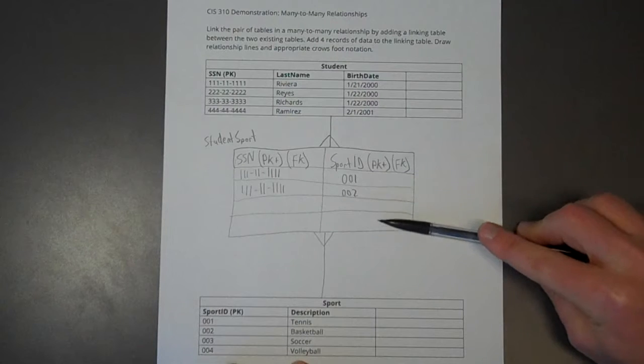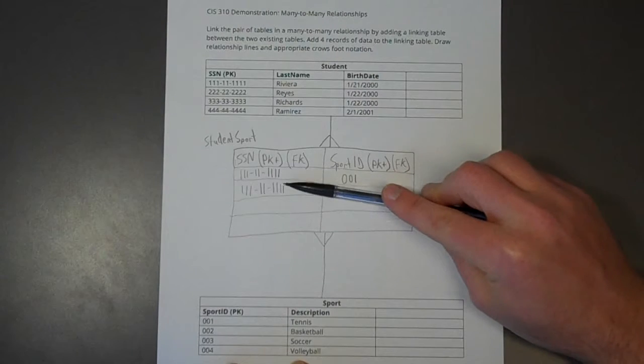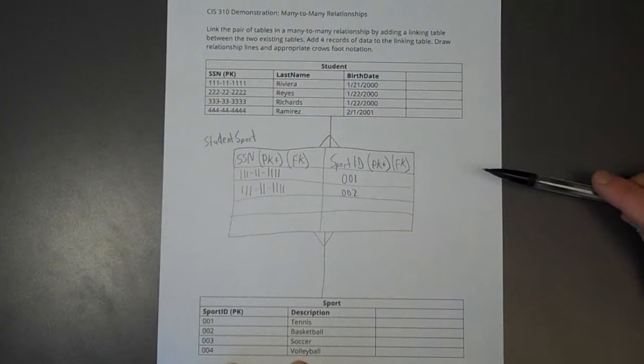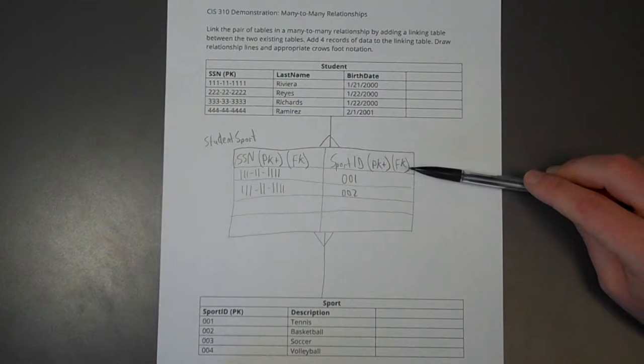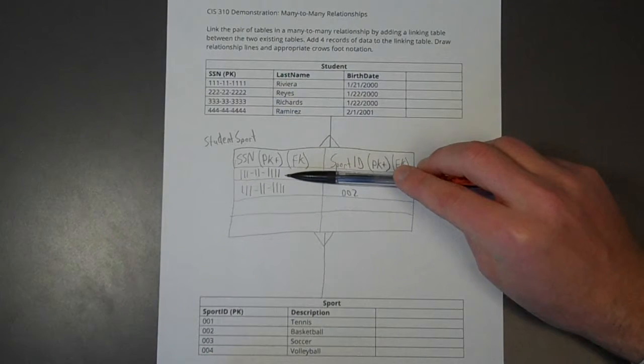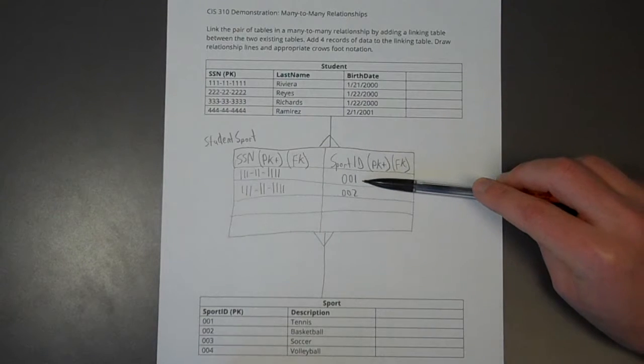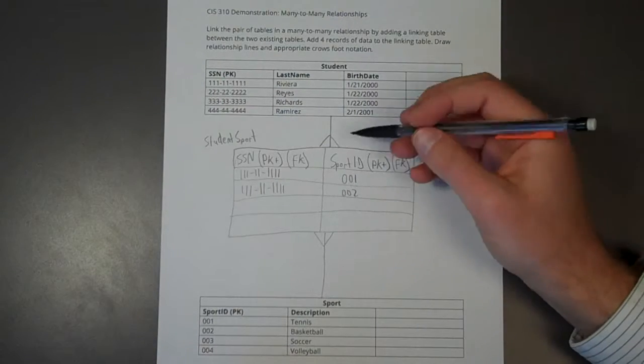Yes, we'll have other 001s in this list. Yes, I will have other social security numbers with the same number. But I will never have another row in this linking or junction table with this social security number and this sport. There will only be one of those.